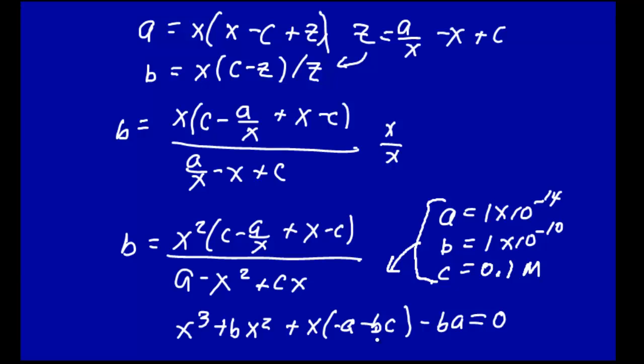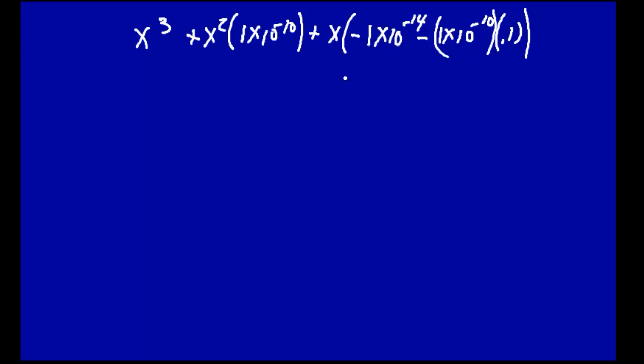So with those a's, b's, and c's here, we can now get a series of numbers. Actually, let's just do that. So we have here x³ + bx² - what was b? b was 1 × 10⁻¹⁰. Plus x. This is minus a, which is 1 × 10⁻¹⁴, minus b, which is 1 × 10⁻¹⁰, times 0.1, times 1 × 10⁻¹⁰. That's equal to 0. And now we have to solve this for x.